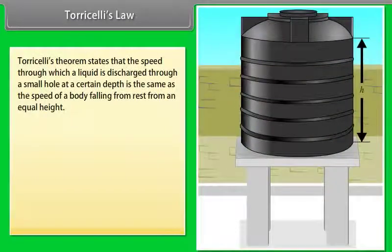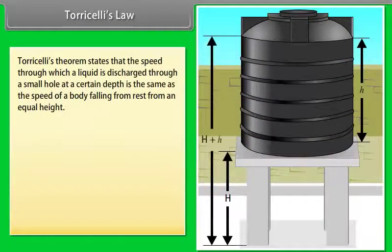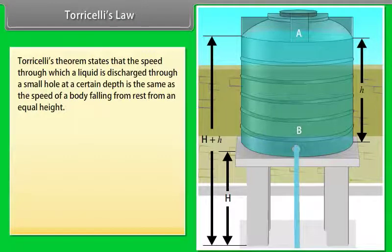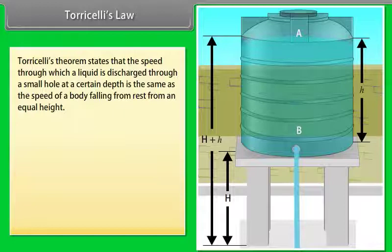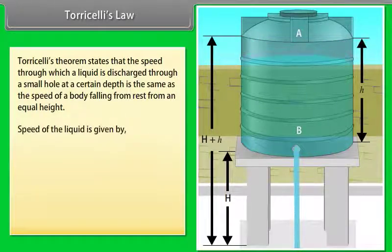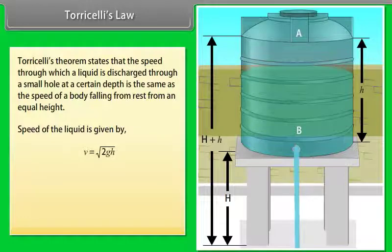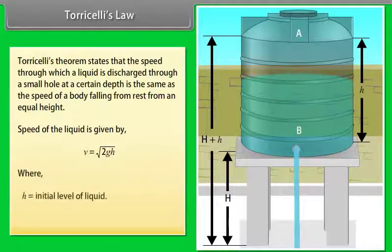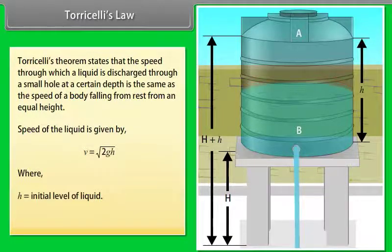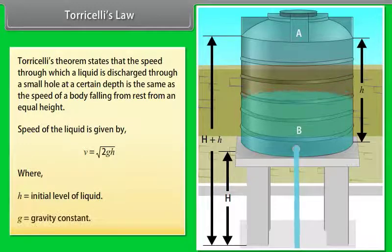Torricelli's law. Torricelli's theorem states that the speed through which a liquid is discharged through a small hole at a certain depth is the same as the speed of a body falling from rest from an equal height. Speed of the liquid is given by V equals √(2GH), where H is the initial level of liquid and G is the gravity constant.